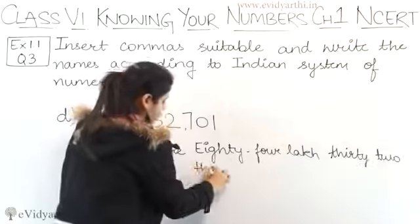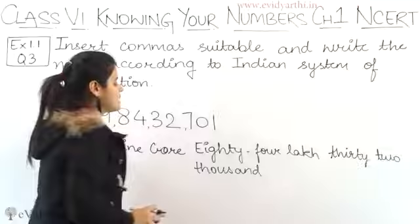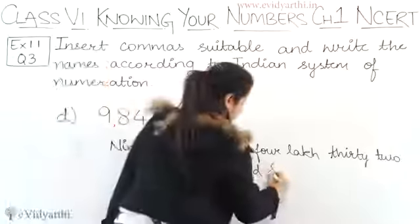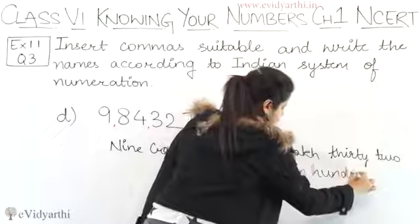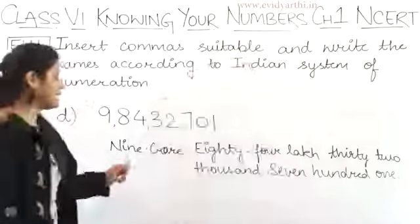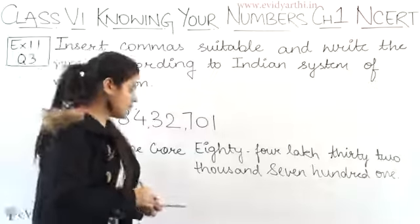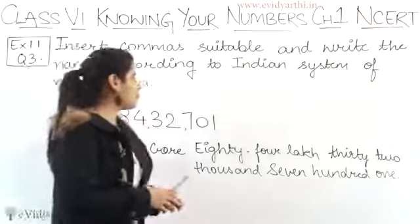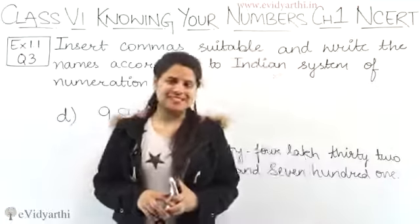And finally 701. So the complete number is 9 crore 84 lakh 32 thousand 701. This was the D part, the last part of this question. Now let's come to the next question.